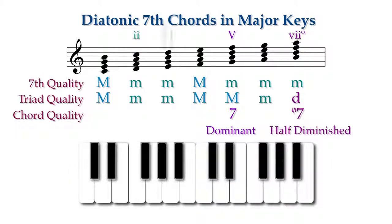The supertonic, mediant, and submediant seventh chords are minor triads with a minor seventh, or simply minor seventh chords.